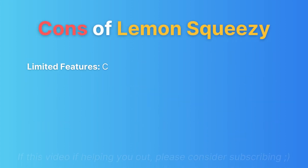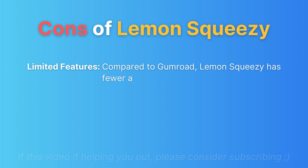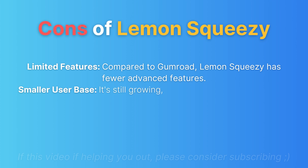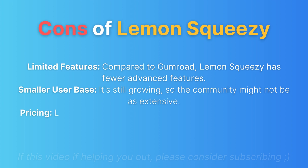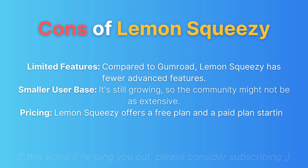Cons of Lemon Squeezy. Limited features: Compared to Gumroad, Lemon Squeezy has fewer advanced features. Smaller user base: It's still growing, so the community might not be as extensive. Pricing: Lemon Squeezy offers a free plan, and the paid plan starts at $10 per month.